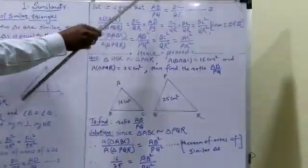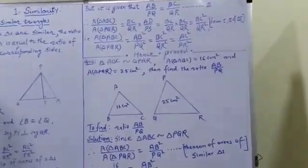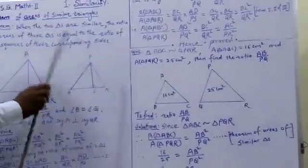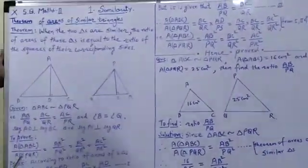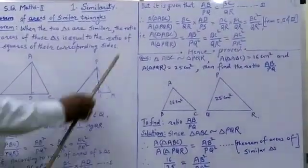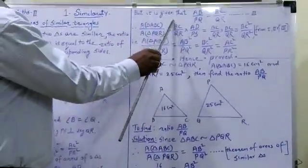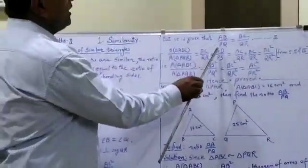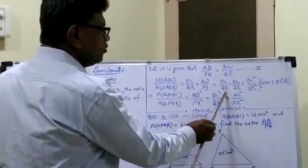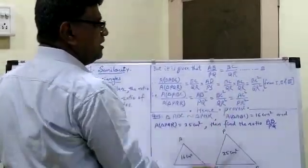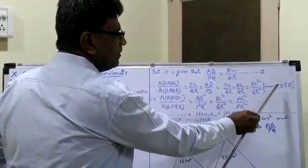But it is given that AB upon PQ equals BC upon QR — equation three. Therefore, area of triangle ABC upon area of triangle PQR equals BC upon QR into AD upon PS. Substituting the values: BC upon QR into BC upon QR, which equals BC square upon QR square, from equations one, two, and three.